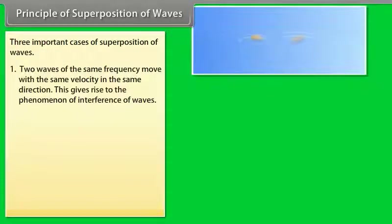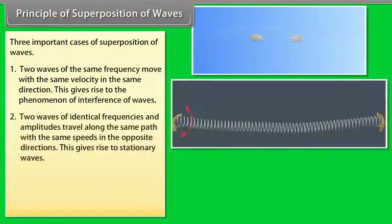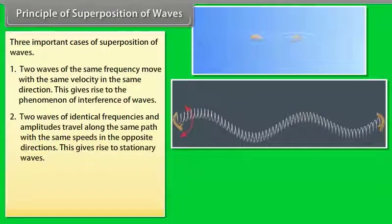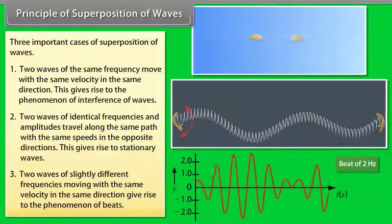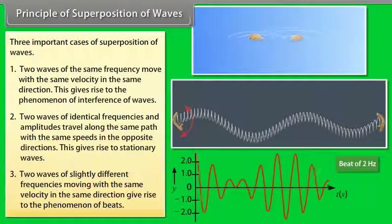Number one: two waves of the same frequency move with the same velocity in the same direction — this gives rise to the phenomenon of interference of waves. Number two: two waves of identical frequencies and amplitudes travel along the same path with the same speed in opposite directions — this gives rise to stationary waves. Number three: two waves of slightly different frequencies moving with the same velocity in the same direction give rise to the phenomenon of beats.